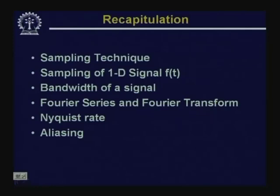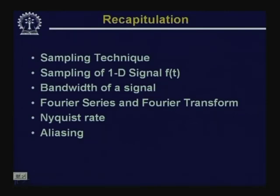We used Fourier series if the one-dimensional signal f is a periodic signal, and if f is an aperiodic signal, we made use of the Fourier transform to find the bandwidth or frequency spectrum. We also discussed that the sampling frequency must be greater than twice the bandwidth of the signal to ensure proper reconstruction — this minimum sampling frequency is known as the Nyquist rate. If the sampling frequency is less than the Nyquist rate, what occurs is known as aliasing.